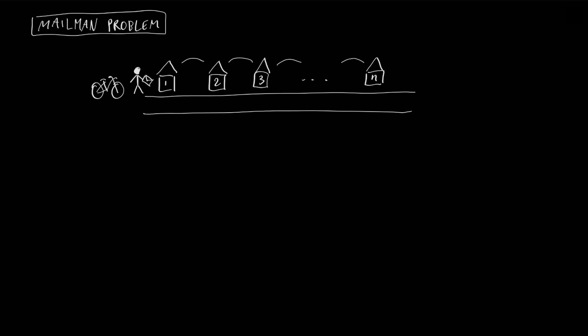To give an example, if we have n equal to 5, a possible path that the mailman could use is the path where he stops at house 1, then at house 5, 3, 2, 4, and then comes back to house number one. We are going to define m as a path walked by the mailman, and this path can also be written as a finite series going from m0, m1, etc., up to mn.